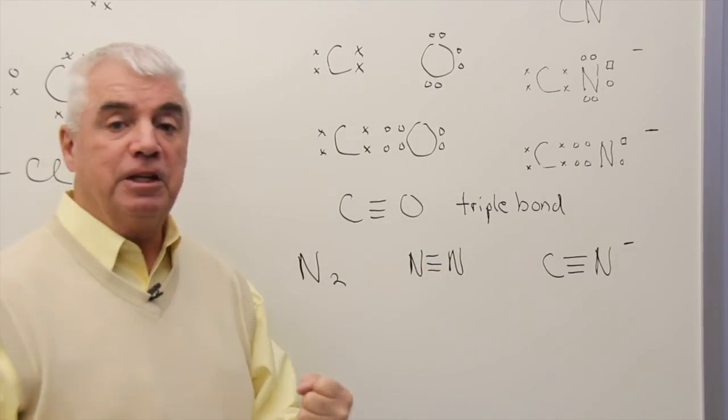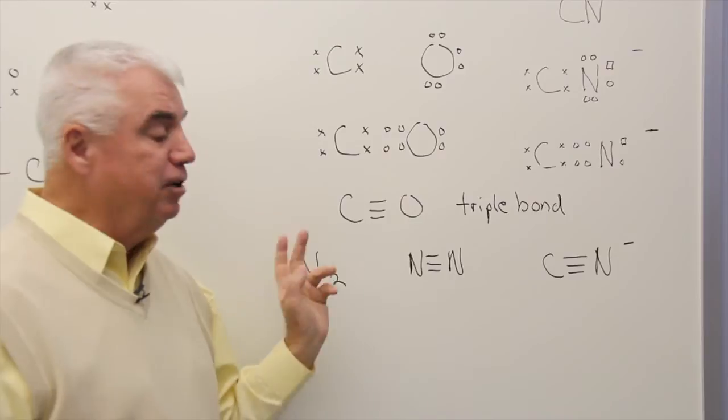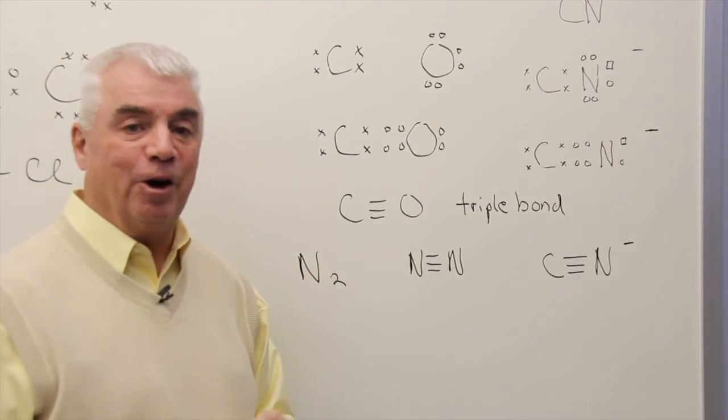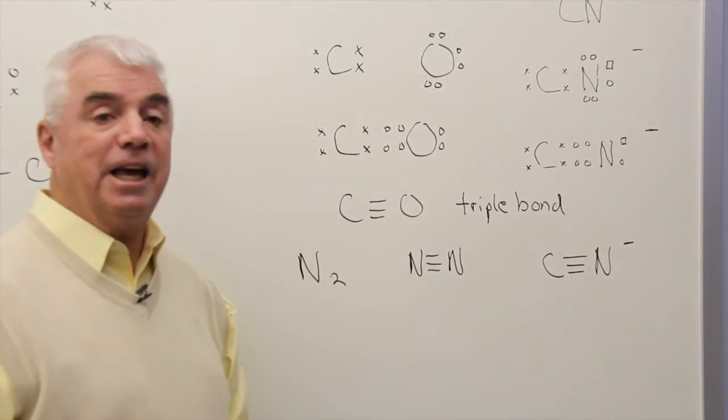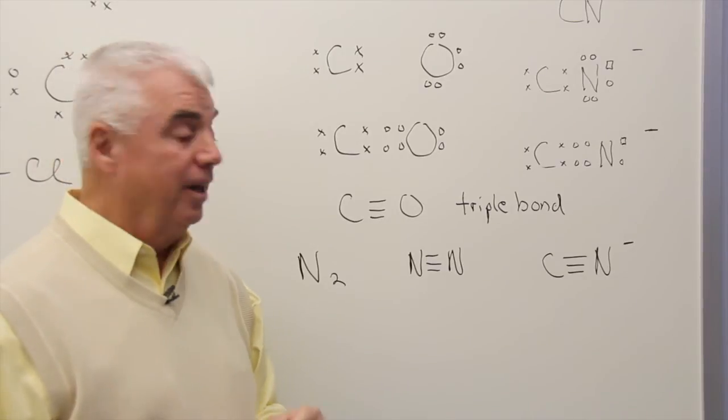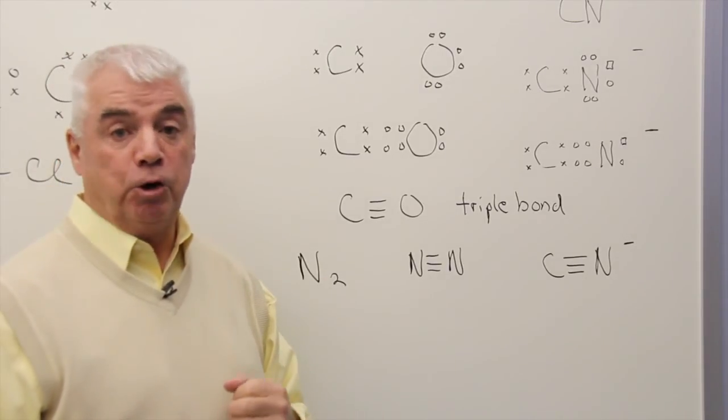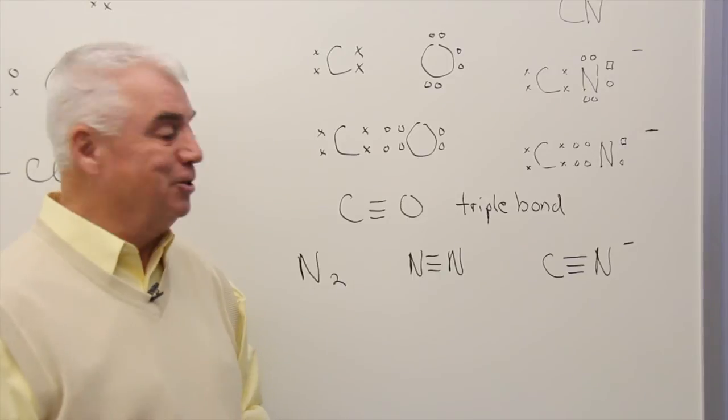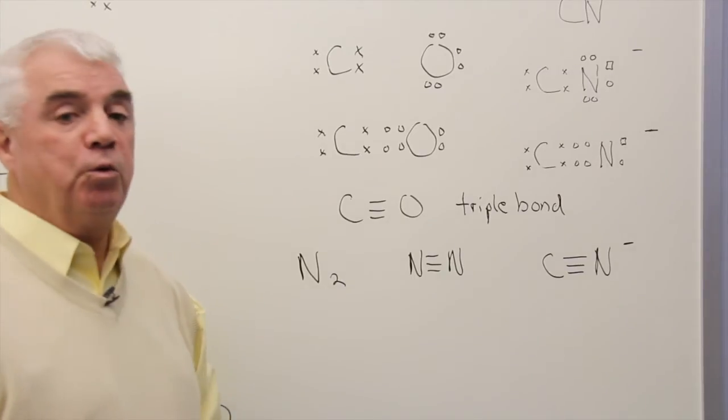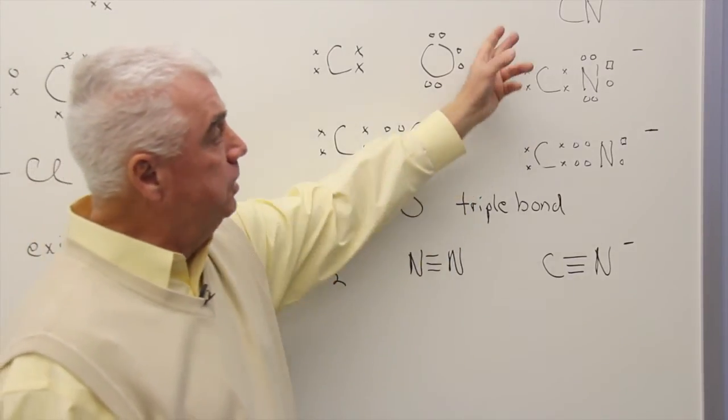Because it's a very stable bond, and 78% of our atmosphere is N2. It means that 78% of our atmosphere is unreactive, is inert, and that's very fortunate for us. Let's do one more thing. Let's look at an ion.